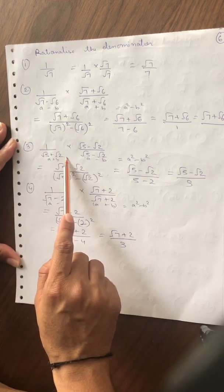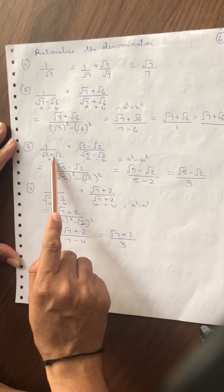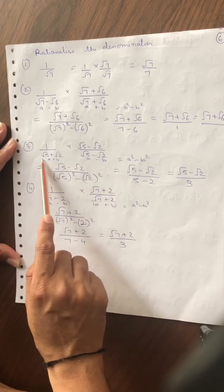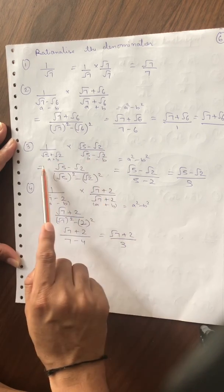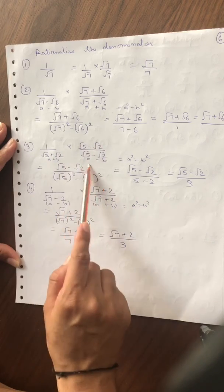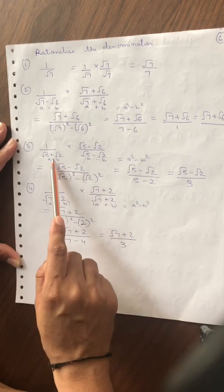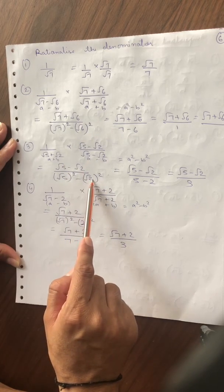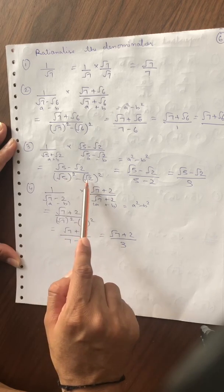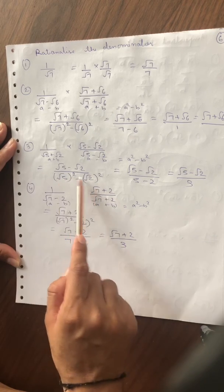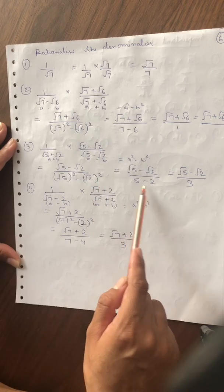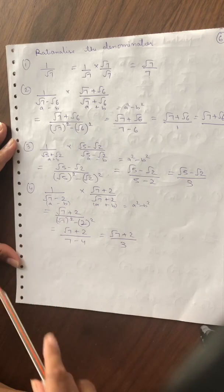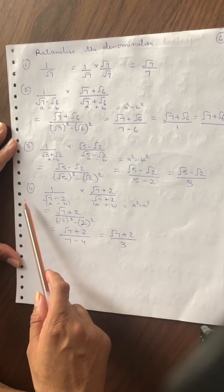Third sum में क्या दिया हुआ है — 1 upon (√5 + √2)। इसमें बीच में plus का sign है, तो हमें conjugate किसका लेना पड़ेगा — बीच में minus का sign कर देना पड़ेगा। Root 5 minus root 2 रहेगा नीचे। a plus b × a minus b की जगह आएगा a² − b²। Root 5 का square 5, root 2 का square 2, तो 5 minus 2 = 3। ऊपर root 5 minus root 2 as it is रहेगा।